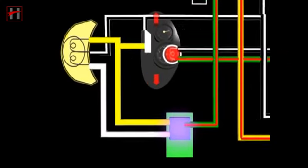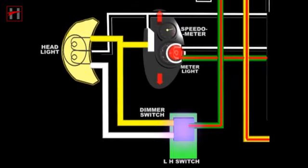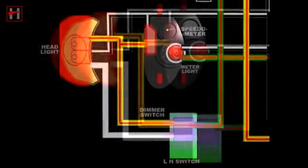In the high beam position of the dimmer switch, the yellow wire gives current to the high beam of the headlight and high beam pilot bulb.